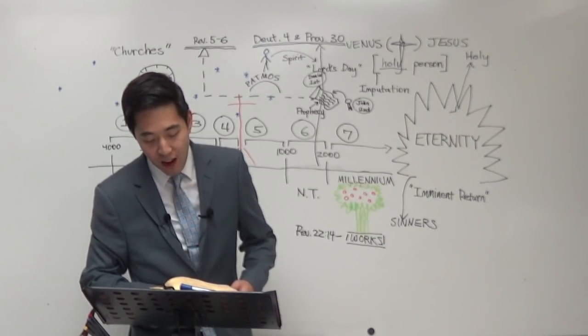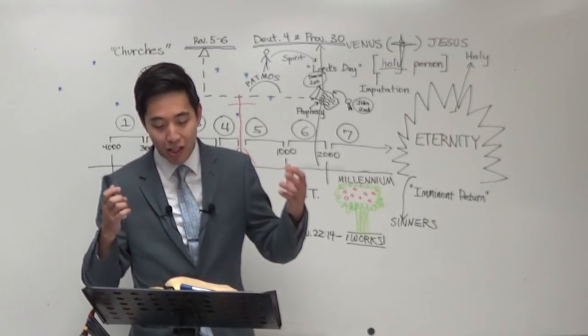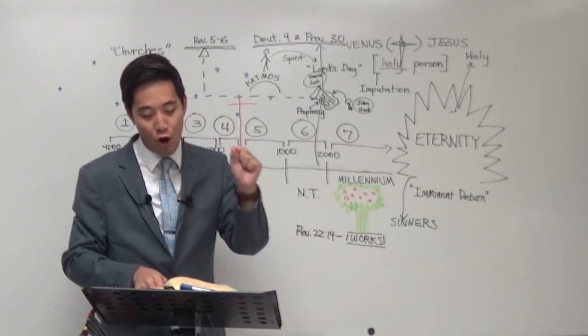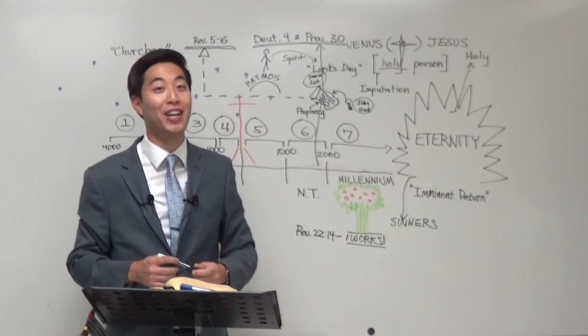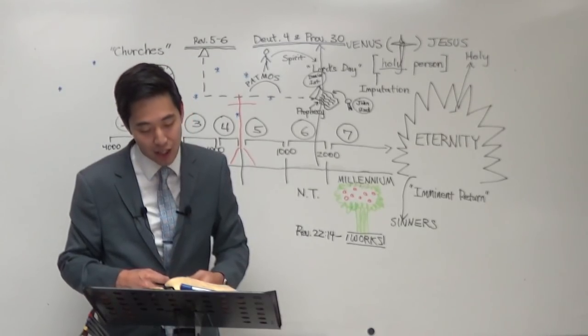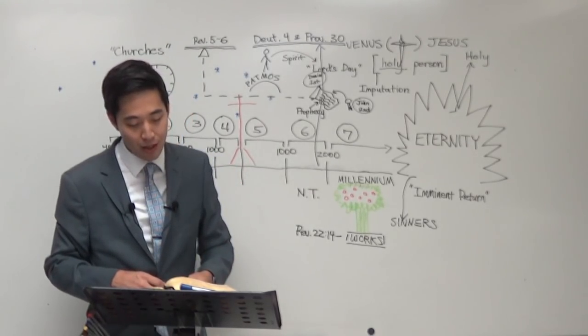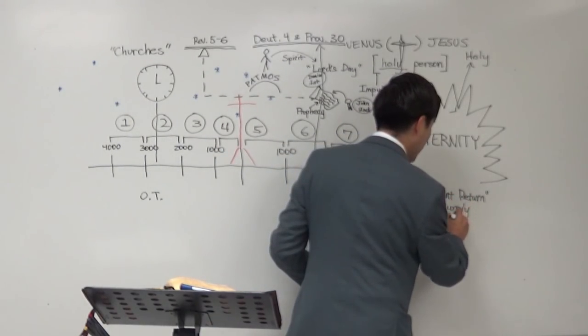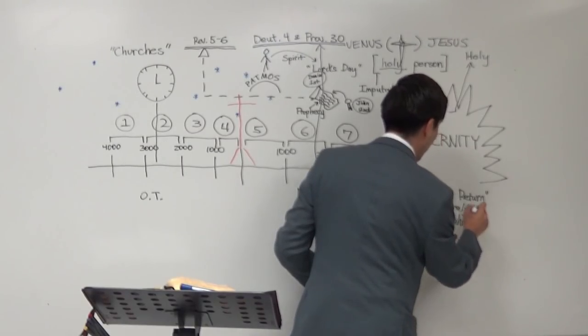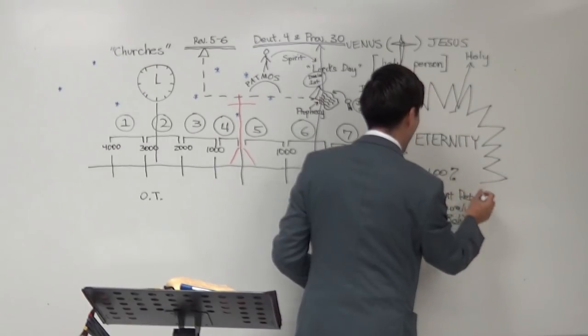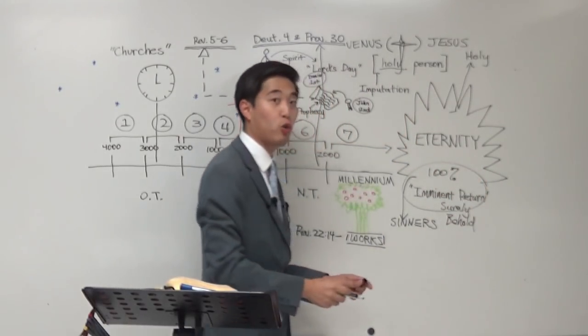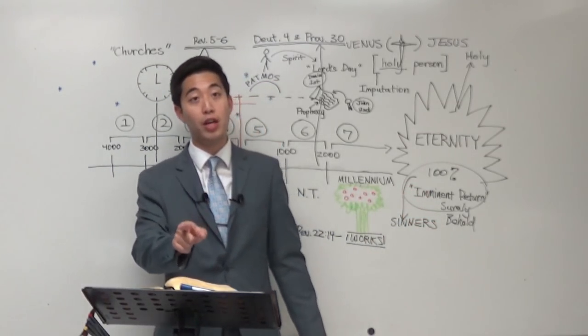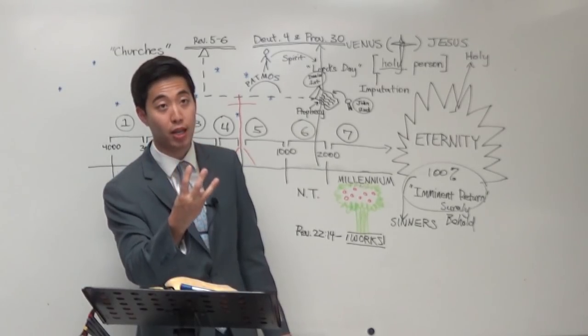Verse 20. He which testifies these things saith, so Jesus is the one who testifies everything that happened in the book of Revelation. And he says again, surely, so that means it is a thousand percent going to happen. Certainly, surely, I come quickly. See, this is surely, this is behold, this doctrine is a hundred percent true. So if there's some idiot online who tries to make you doubt a pre-tribulation rapture doctrine or the imminent return of Jesus Christ, then they're a heretic according to Revelation 22, because Jesus repeated three times so that you can get the memo here.